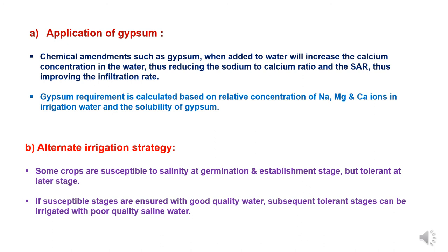Second method is alternate irrigation, which refers to application of good quality water and poor quality water depending upon the crop status and tolerance. Crop susceptibility to salinity varies crop stage-wise. Generally at germination and establishment stage, crops are more susceptible but tolerant at later stages. In such cases, susceptible stages may be ensured with good irrigation water quality, and later stages can use poor quality water when the crop is tolerant as per the stage.